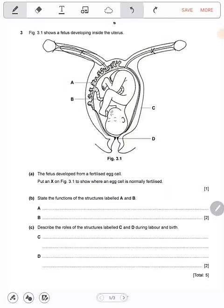State the functions of the structures labeled A and B. For you to know the function of something, you need to know the name of that thing. A is the placenta. What does the placenta do? Exchange of gases, carbon dioxide and oxygen, also the exchange of waste materials between the mother and the fetus, and it's important in the exchange of nutrients.